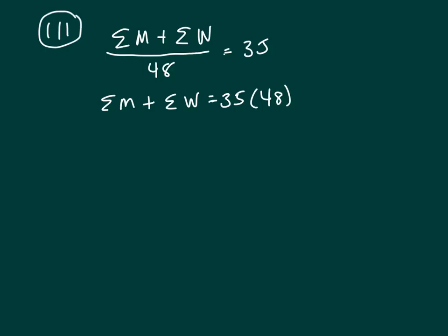But they tell us that the average age of the men was exactly 38. So the sum of the men divided by how many men, which is 22, is 38. So we know that the sum of men will be 38 times 22.